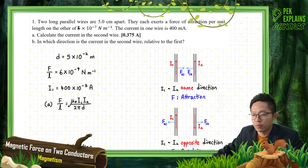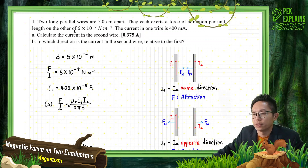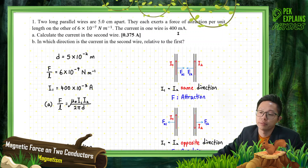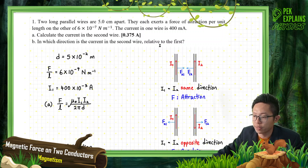Two long parallel wires are 5 cm apart. They each exert a force of attraction per unit length on the other of 6×10⁻⁷ N/m. The current in one wire is 400 milliampere — we need to change this to SI units. Calculate the current in the second wire and determine in which direction the current in the second wire flows relative to the first.